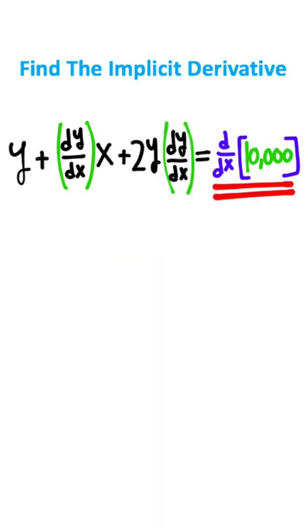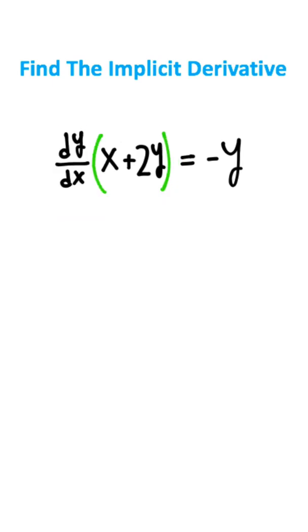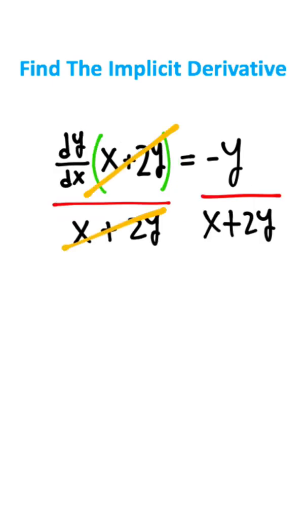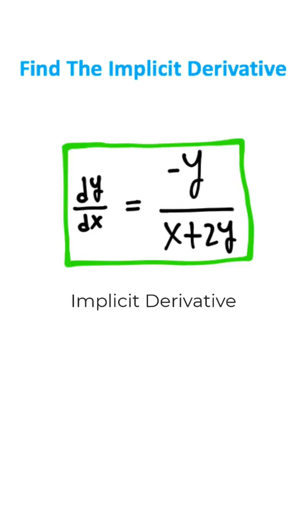The derivative of any constant is 0. Now we have our equation and need to isolate dy over dx. Subtract y from both sides to cancel the y's. Factor dy over dx out of this expression, then divide both sides by x plus 2y. The x plus 2y cancels, giving this expression. This is the implicit derivative and the answer.